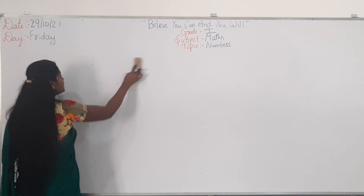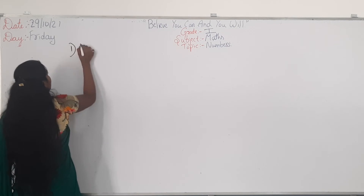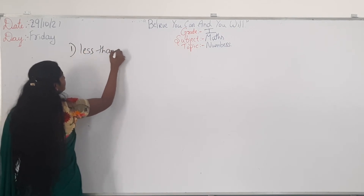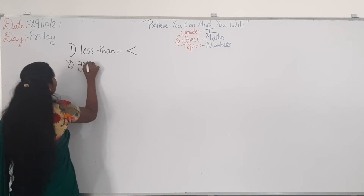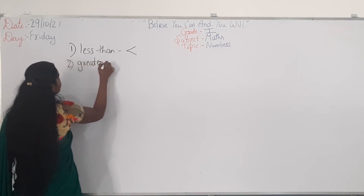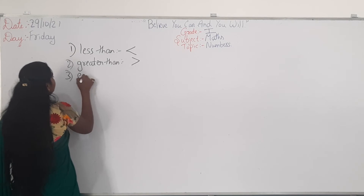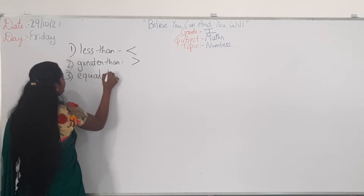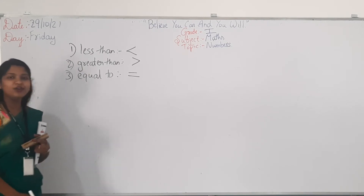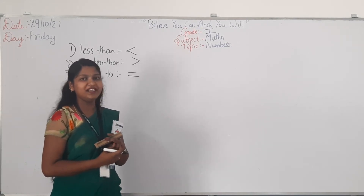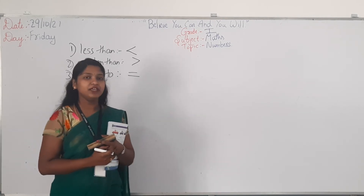In mathematics, we have three signs to compare numbers. First is less than — the symbol is like this. Next is greater than — the symbol will be like this. And the third one is equal to — that symbol is like this. I hope you all know, right? In your pre-training, you have done this. Using these symbols, we will compare the given numbers.